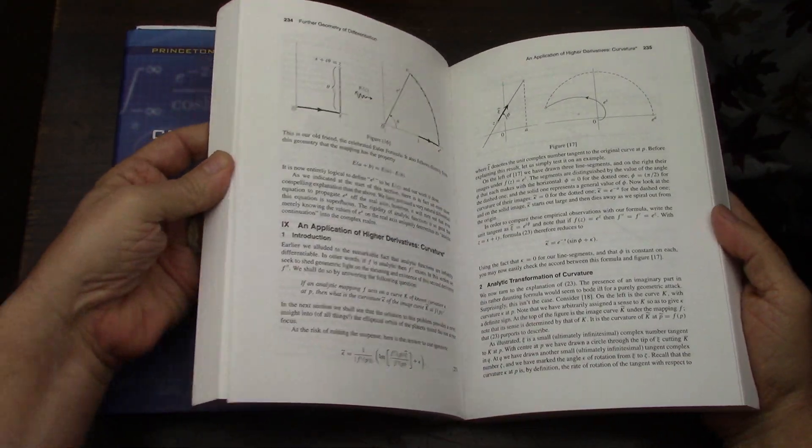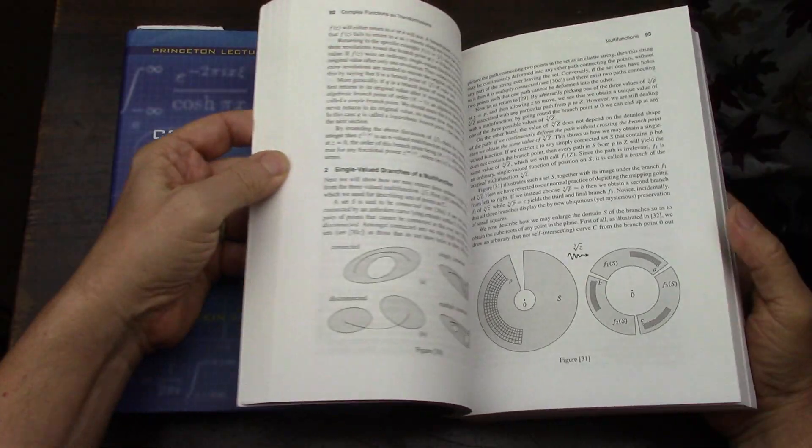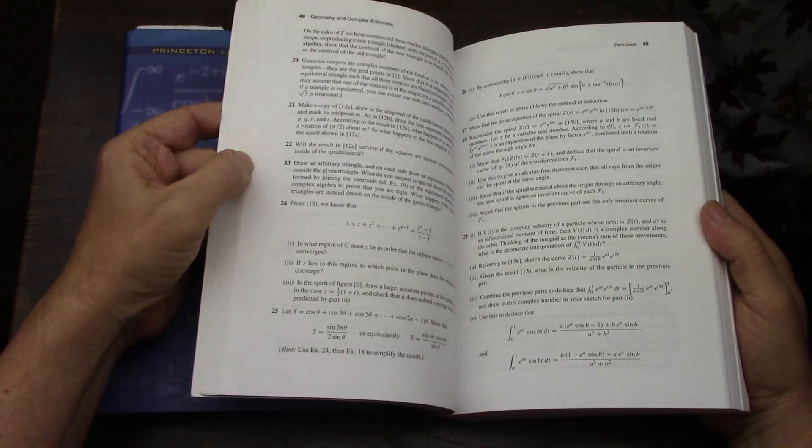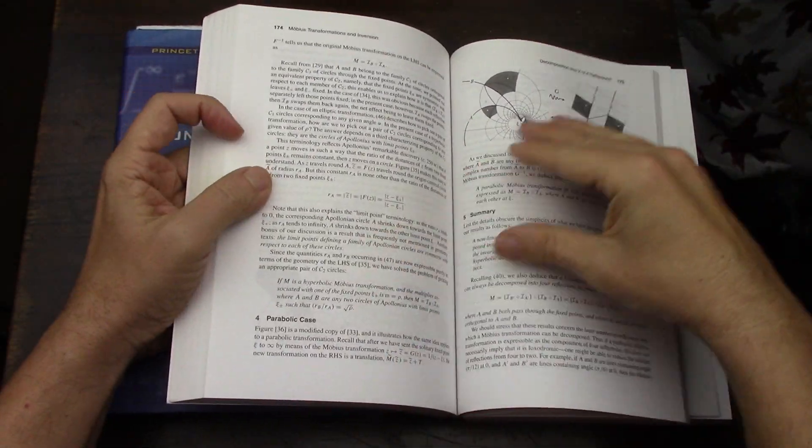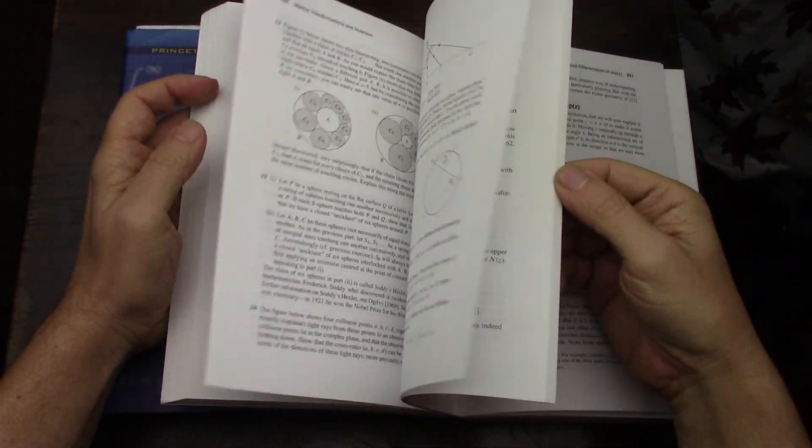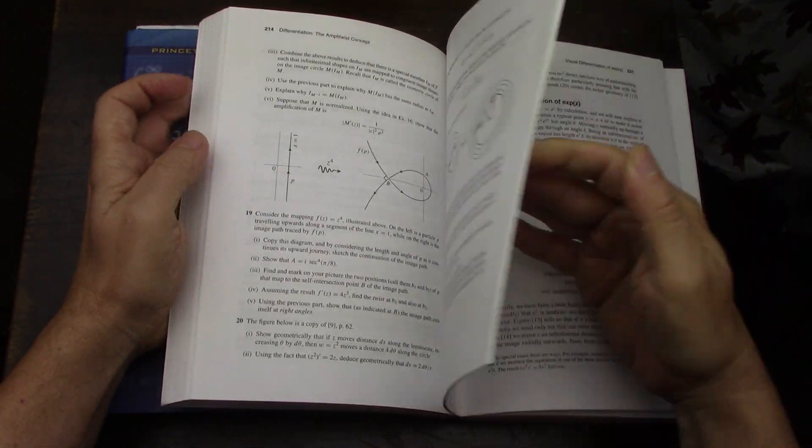I've shown this book before. The book is beautiful. It has tons of pictures. Of course, visual is in the title. A lot about conformal mapping. Mobius Transformations. All the good stuff.